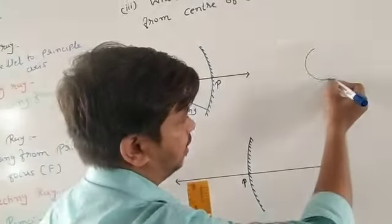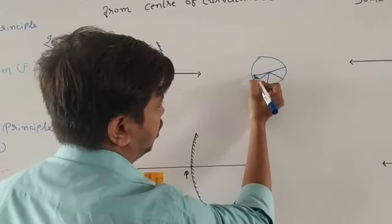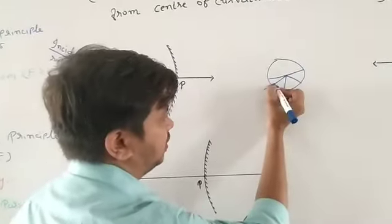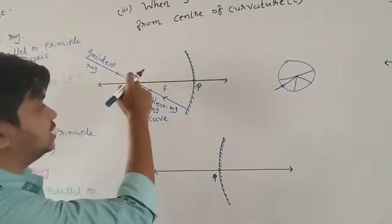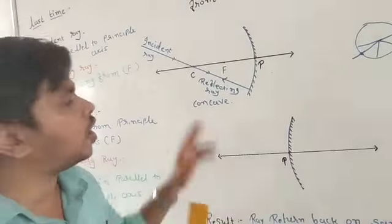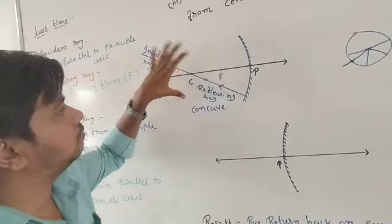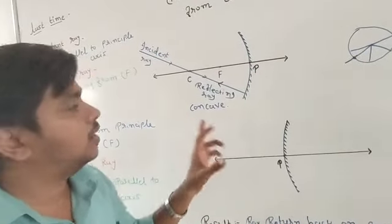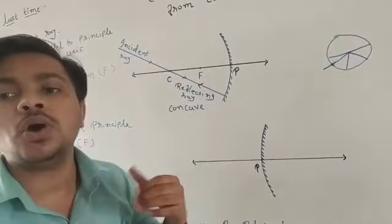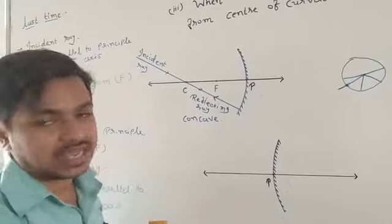What is the reason behind it? When we take a circle, all lines passing from the center to any point on the circle make a normal at that point. So when this ray passes from the center of curvature, it is exactly on the normal. When it is on the normal, it does not reflect in any other direction — it just goes back on the same path. It follows the law of reflection: the angle of incidence is 0 degrees, so the angle of reflection is also 0.